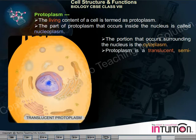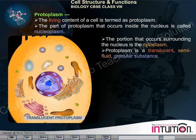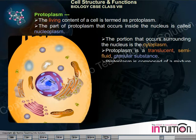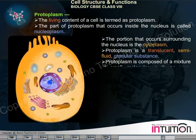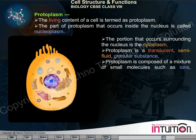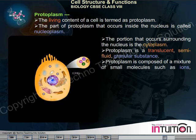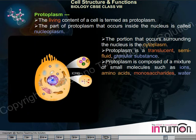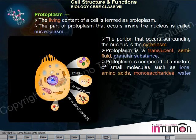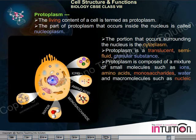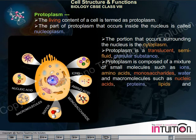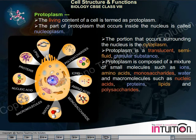Protoplasm is a translucent, semi-fluid granular substance. It is composed of a mixture of small molecules such as ions, amino acids, monosaccharides, and water, as well as macromolecules such as nucleic acids, proteins, lipids, and polysaccharides.